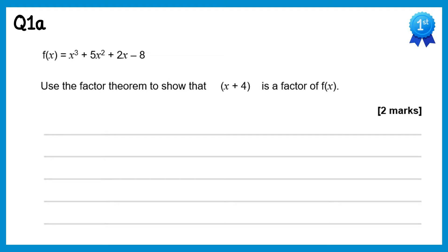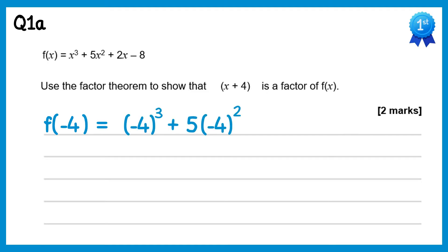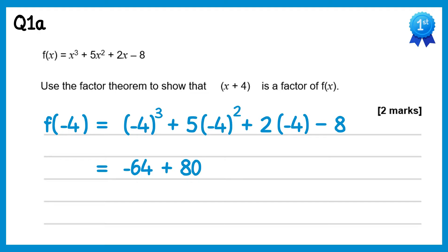For this question we need to show that x plus 4 is a factor. To do that we'll substitute in negative 4. So f of negative 4 is negative 4 cubed plus 5 lots of negative 4 squared plus 2 lots of negative 4 take away 8. Since it's a 'show that' we need to do all of the steps. Negative 4 cubed is negative 64, negative 4 squared is 16 and times that by 5 gives positive 80, 2 times negative 4 is negative 8 and then negative 8. If you do this you get 0, which shows that x plus 4 is a factor.